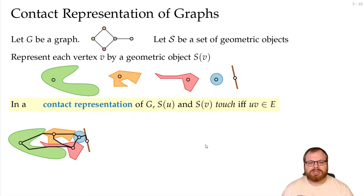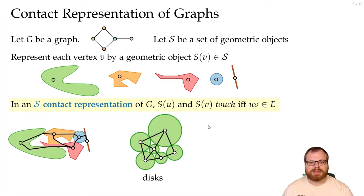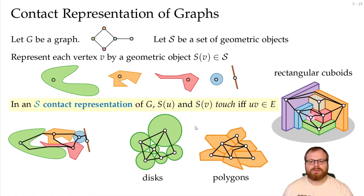We can restrict it to a set of allowed geometric objects. And then we have a special contact representation that depends on the type of objects that we allow. For example, we can allow all disks in the plane, or all polygons, or we can even go to 3D and allow all rectangular cuboids.